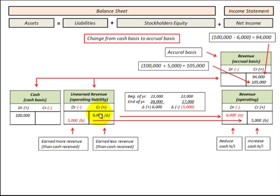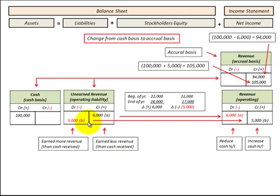In the case where our unearned revenue increases by six thousand dollars for the year, we would have a reduction in revenue of six thousand dollars. Comparing that to the hundred thousand dollars cash received, less this reduction of six thousand dollars, our accrual basis revenue would be ninety-four thousand dollars.